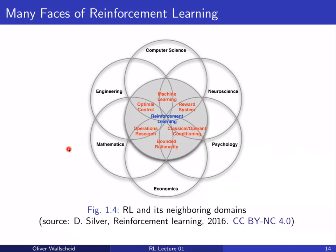Reinforcement learning is linked not only to engineering, mathematics, and computer science, but also to economics, psychology, and neuroscience — as shown in a figure from David Silver. The focus of this lecture at Paderborn University will be clearly in the engineering domain with some side views in computer science and mathematics. For connections to psychology, Sutton and Barto's book contains multiple chapters on that topic.